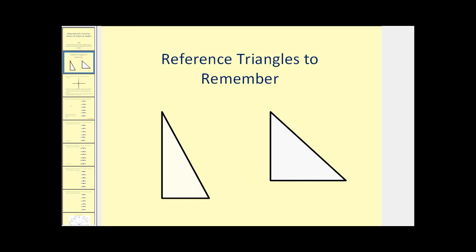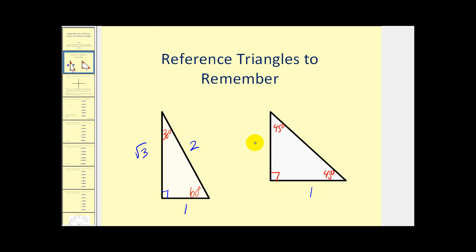The first thing we need to remember is if we have a 30-60-90 right triangle, the relationship among the three sides would be one for the shortest leg, two for the hypotenuse, and square root of three for the other leg — or any multiple of these. For a 45-45-90 right triangle, the two legs would each be one and the hypotenuse would be the square root of two, or any multiple. This was covered in a previous video, so you may want to watch that first if you're unfamiliar.